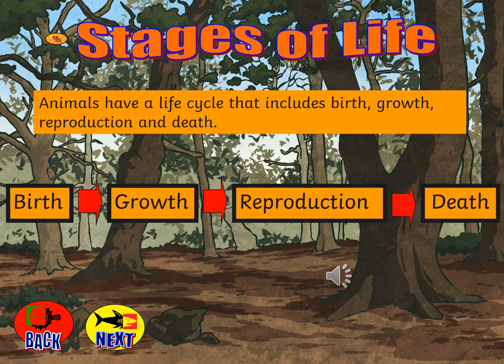Animals have a life cycle that includes birth, growth, reproduction and death. Can you remember what reproduction is? Think back to our seven life processes — Mrs Nerg. What was the action that we did for reproduction? Reproduction is when living things produce offspring — so when a human has a baby, or when a dog gives birth to puppies. Or in plants, it's when a plant sheds its seeds to grow more plants.